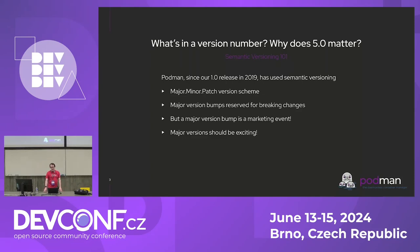Let's talk about what is in a version number and why the big 5.0 matters. Podman since 1.0 has used semantic versioning — a major-minor-patch scheme where major releases correspond to breaking changes, minor releases to features, and patches to bug fixes. So 5.0 is basically a license for us to make user-affecting changes that break things. At the same time, 5.0 is also a bit of a marketing event. People get excited about major version numbers, people write articles about them, so it's the kind of thing where you want to put stuff in that people will be excited about.